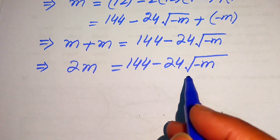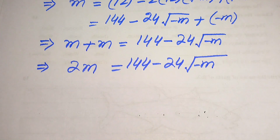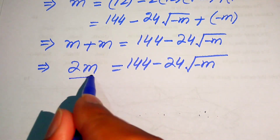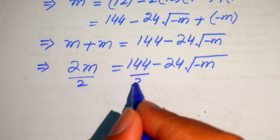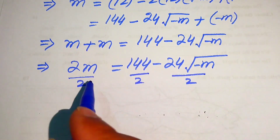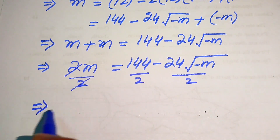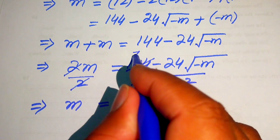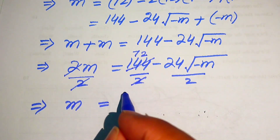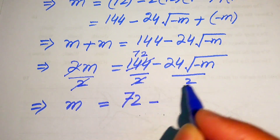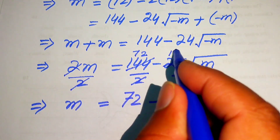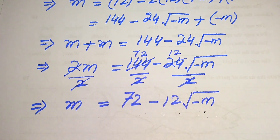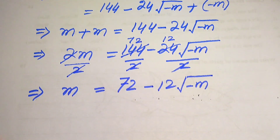We still have a square root sign on the right hand side, so we need to remove it. First, we divide both sides by 2: each term is divided by 2, so we get m equals to 72 minus 12 times square root of minus m.